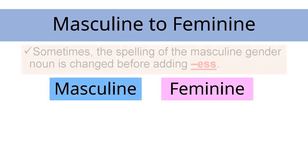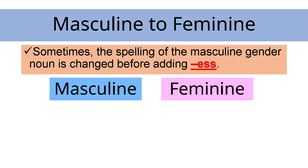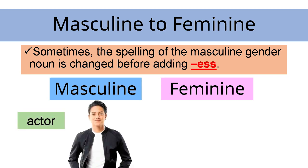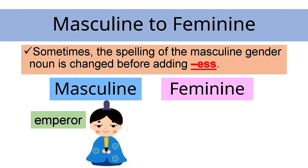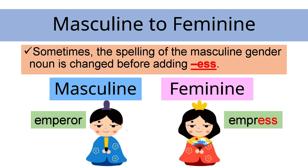Sometimes the spelling of the masculine gender noun is changed before adding -ess. For example, actor becomes actress, and emperor becomes empress. In these examples, the spelling of the masculine nouns is slightly changed and -ess is added to form the feminine nouns.